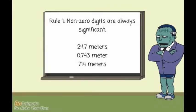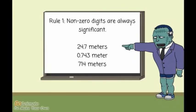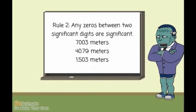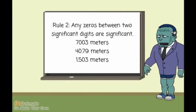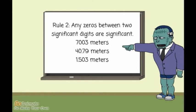Here are some examples. Non-zero digits are always significant. Each number has a measure of length to three significant figures. Rule 2: Any zeros between two significant digits are significant. Each number has a measure of length to four significant figures.